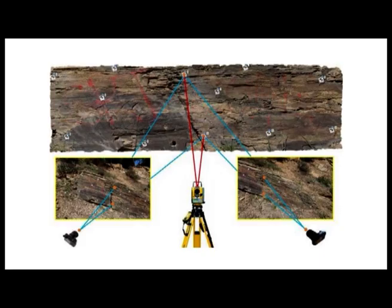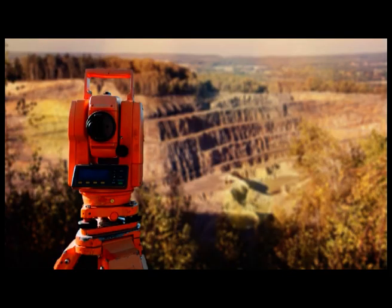Terrestrial photogrammetry: the camera is used in a stationary position, and photographs are captured from a fixed known position on or near the ground. The camera tilt and other specifications are controlled. A photo theodolite is a unique instrument utilized in capturing these photographs.